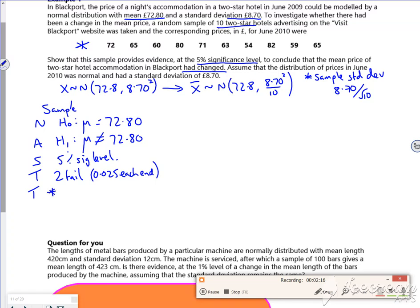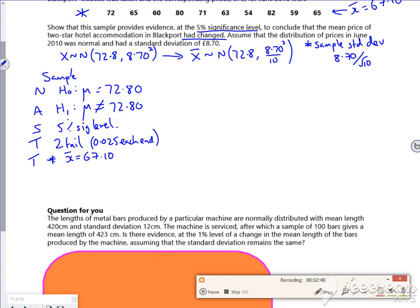For my test, if I put those numbers in there, my X̄ is, so these numbers here give an average of £67.10. So my X̄ is £67.10. Now then I need to decide because it's two-tail, I need to decide if I'm doing less than or greater than when I check it. Because my X̄ is less than my μ, I'm going to go with that tail, so I'm going to look to the left.